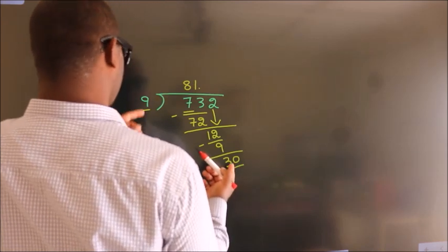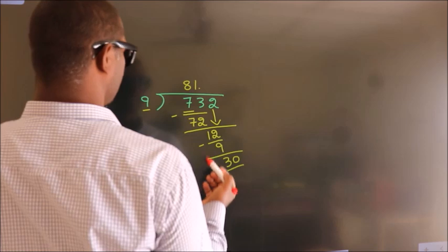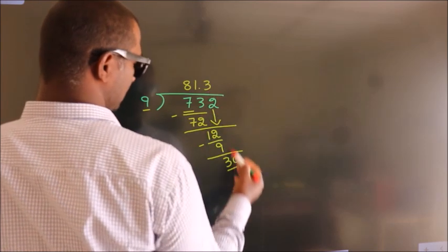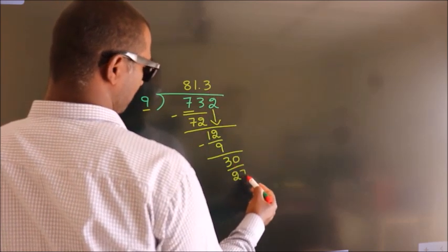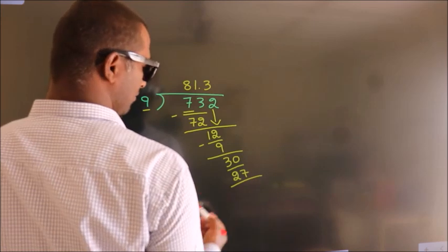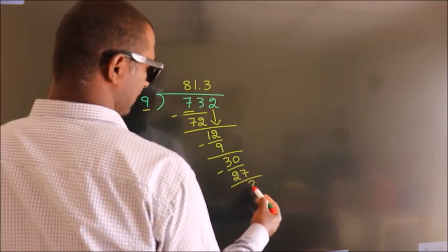A number close to 30 in the 9 table is 9×3, which is 27. Now we subtract. We get 3.